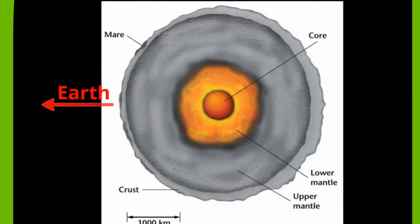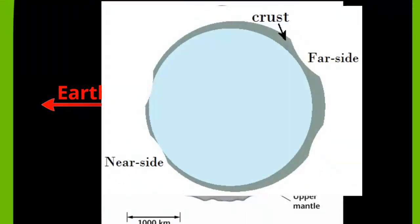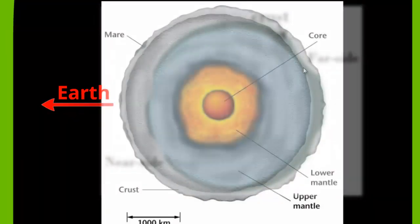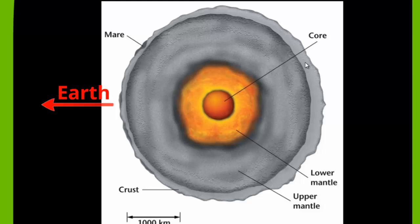To explain why there is no maria on the far side, we look at a diagram of the moon. This side always faces the Earth and has the maria. The crust on this side is much thinner than on the far side. Since the moon moves in such a way that it's always facing the Earth, that actually caused all the layers to shift a little bit towards the Earth — the core, the outer mantle, the lower mantle — which causes the side away from the Earth to be thicker. So an impact that caused a maria on the near side would have to go much deeper into the crust on the far side to reach the mantle and cause that mantle material to rise up and fill in, making a maria. The basic explanation is that the far side of the moon has a much thicker crust.